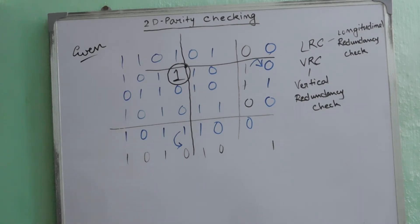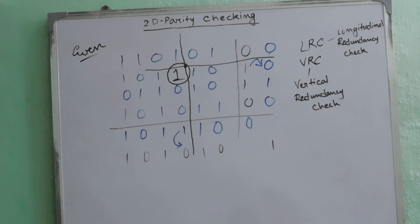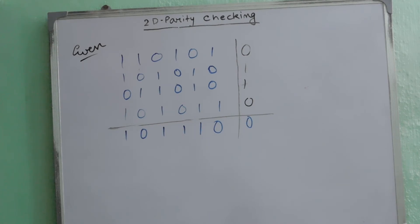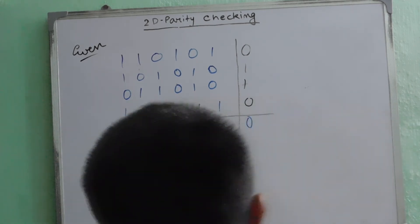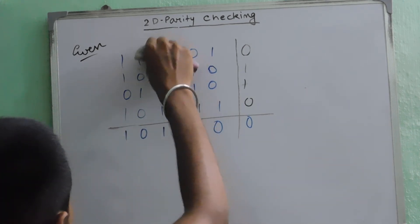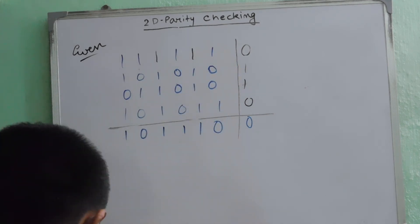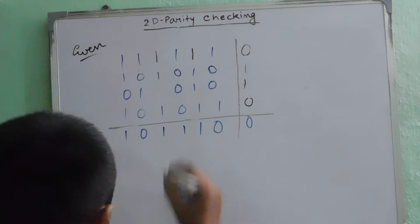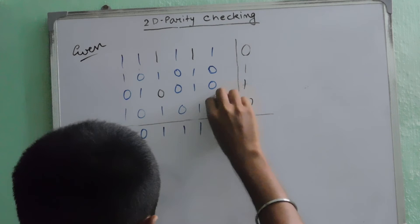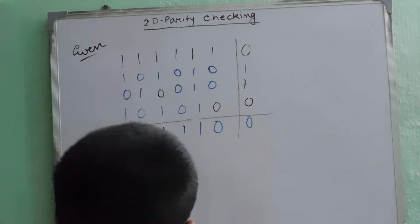In a similar way you can apply this for odd parity and also for 2 and 3-bit errors. Now, what if there are 4-bit errors? This was our original data set. If we change 4 bits: one 0 is changed to 1, another 0 is changed to 1, one 1 is changed to 0, and another 1 is changed to 0. So we have changed these 4 bits.